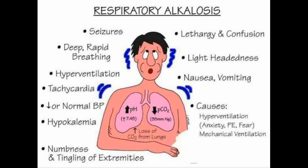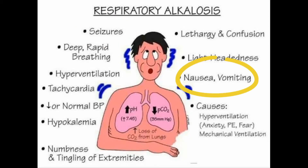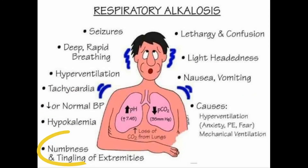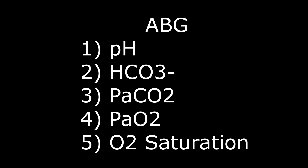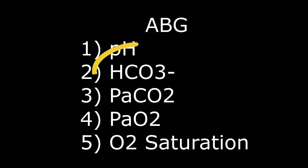The patient can also have seizures, nausea, vomiting, and reduced or normal blood pressure, along with neurological features and tachycardia similar to metabolic alkalosis. For diagnosis, you can check the arterial blood gases: pH 7.35 to 7.45.